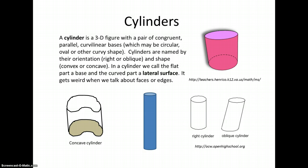We name cylinders by their orientation, are they right or oblique, and their shape, are they convex or concave. In a cylinder, we call the flat part a base and the curved part a lateral surface.